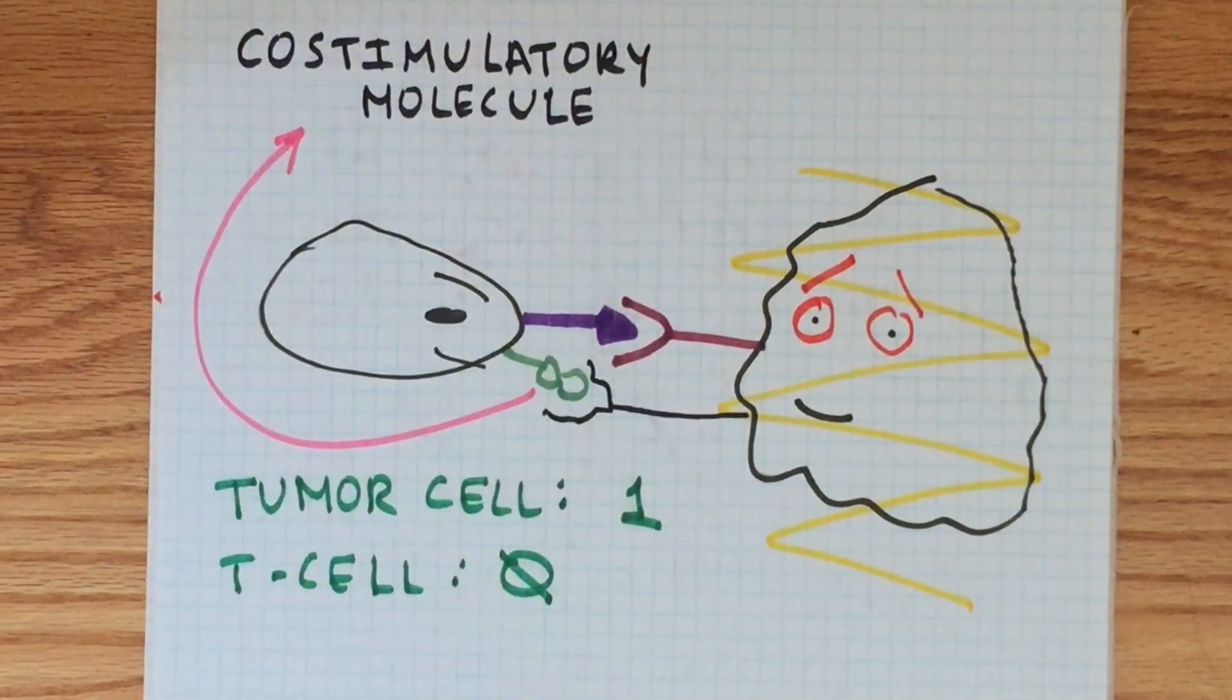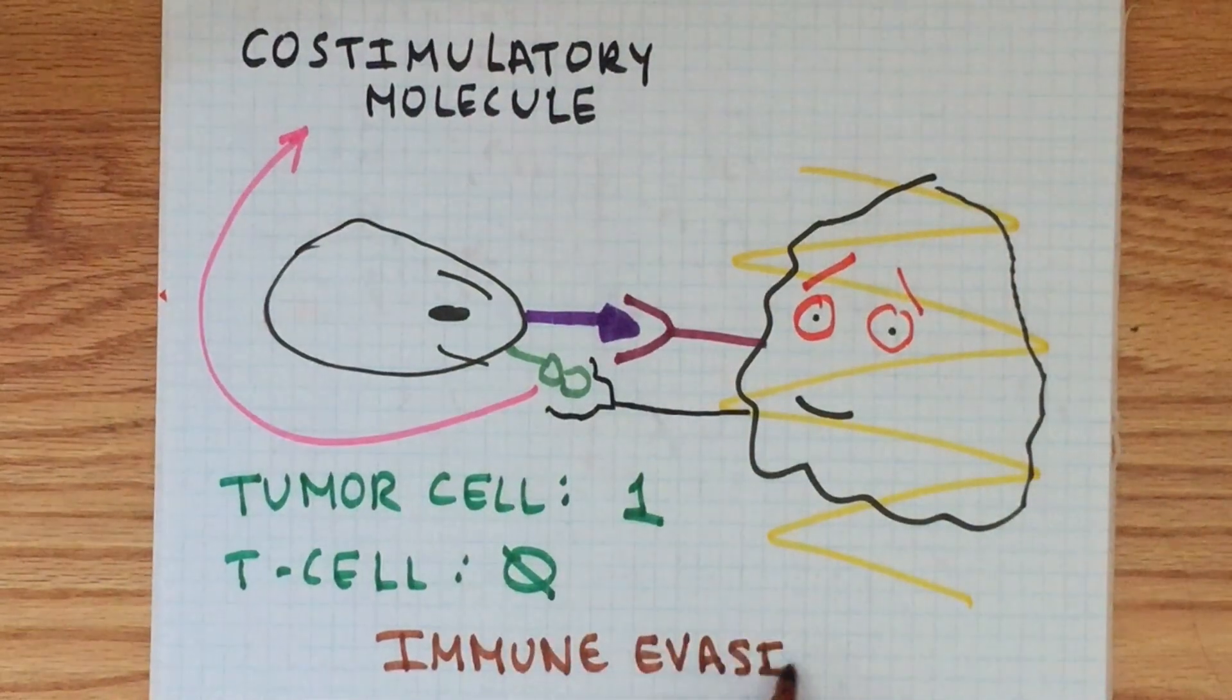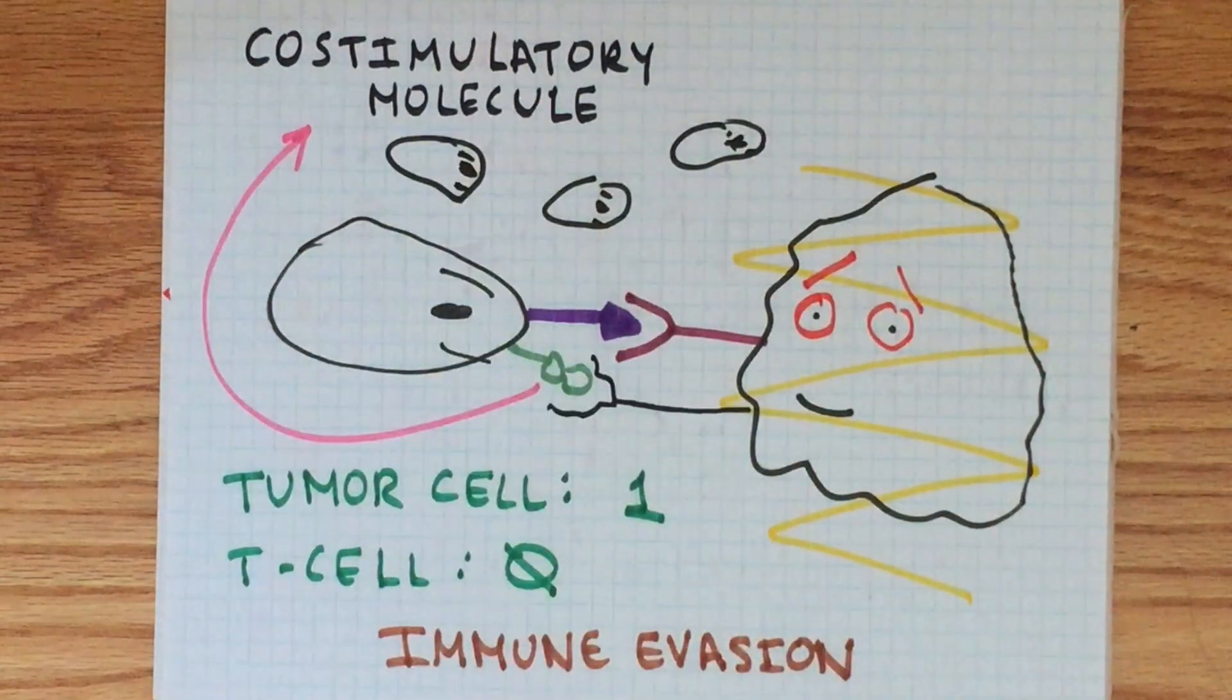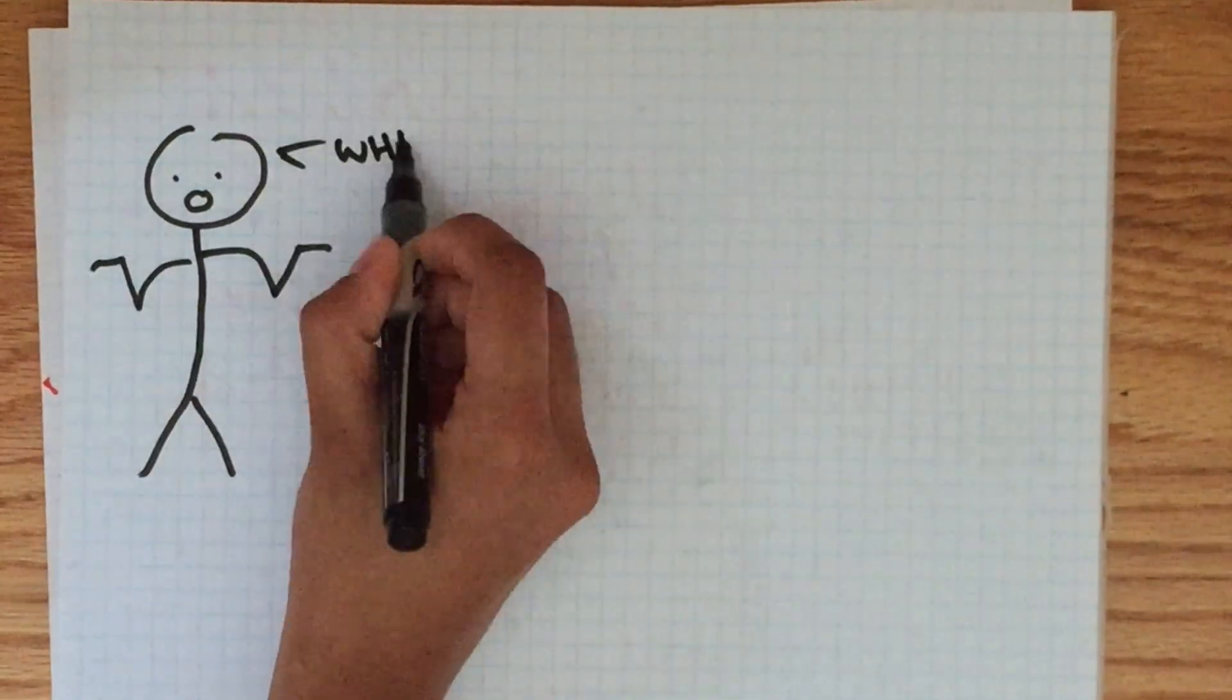Thus, instead of the tumor cell dying, the T-cell dies instead. This is a form of what is known as immune evasion, and is a process which keeps cancer proliferating without interference.